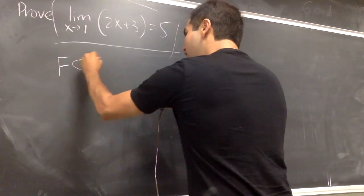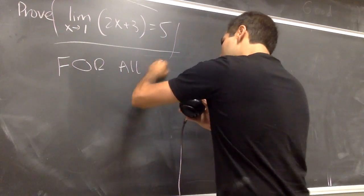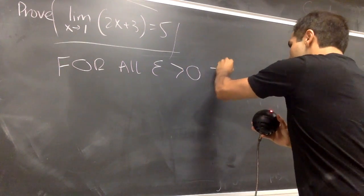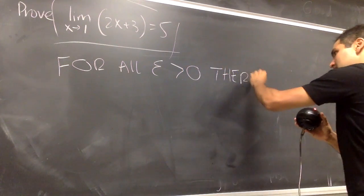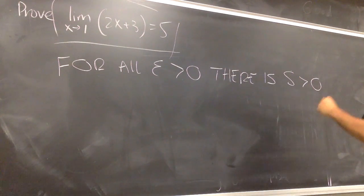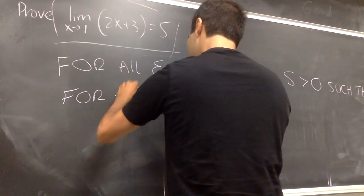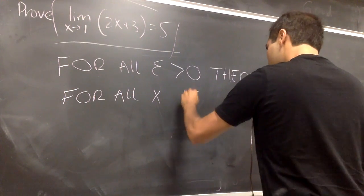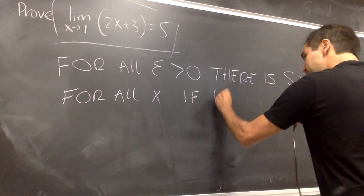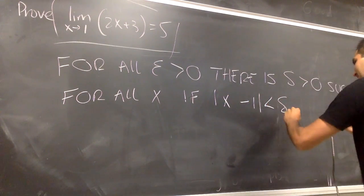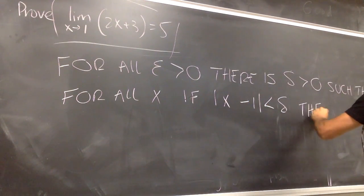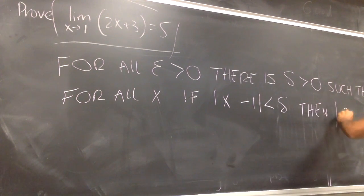It means that for all Epsilon greater than 0, there is Delta greater than 0, such that for all x, if absolute value of x minus 1 is less than Delta, then absolute value of 2x plus 3 minus 5 is less than Epsilon.